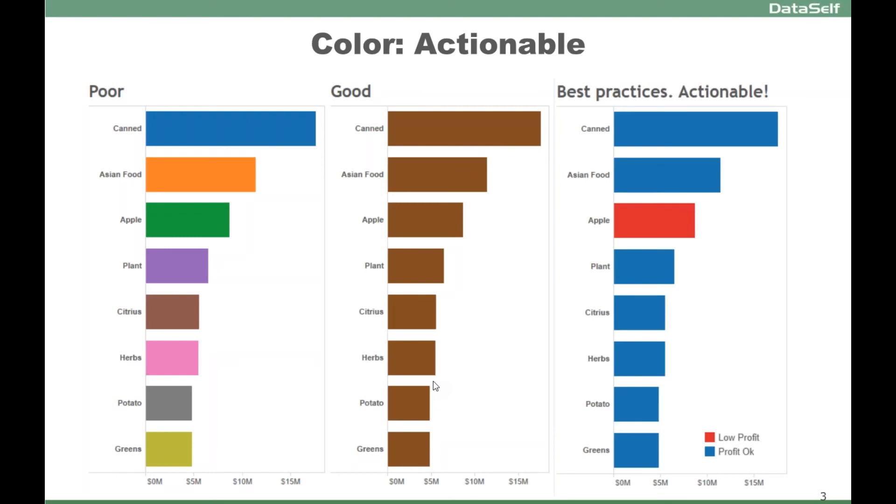But if you're trying to make it actionable, if you have a problem with some of them, and then you use color hues to tell, hey, if it's red it's bad, it's not profitable. Now for actionable information, this is so much more insightful to get people to act on the right trends.